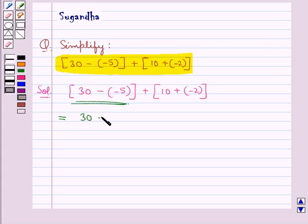So here we have 30 plus 5 plus, now 10 plus of minus 2 would be 10 minus 2.